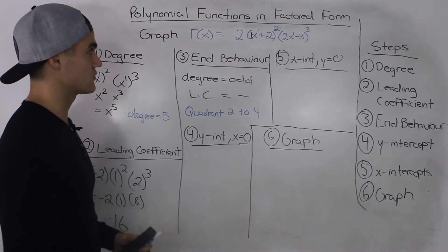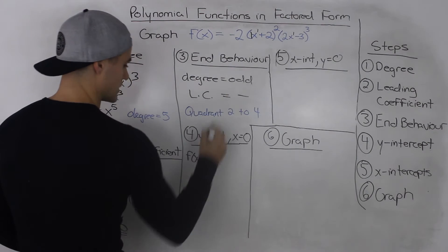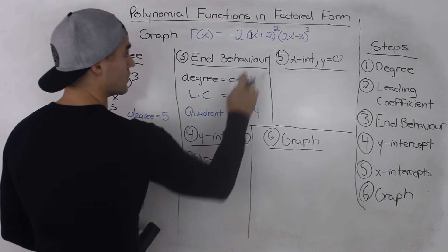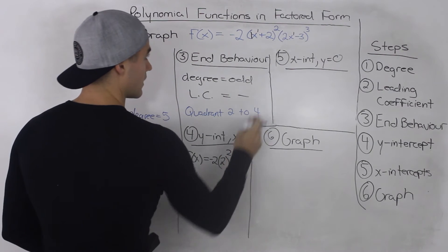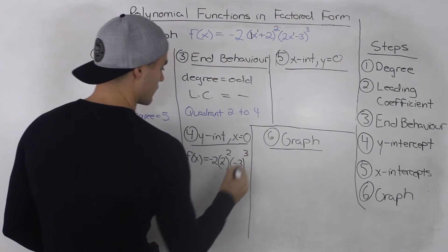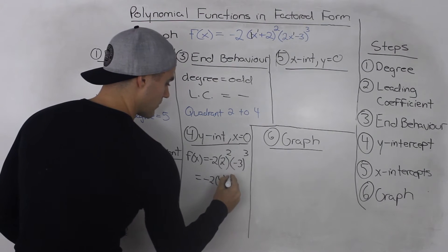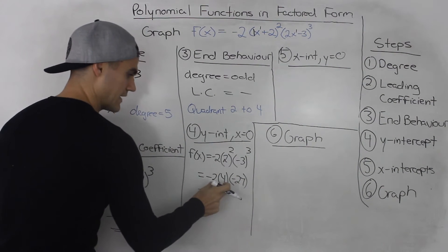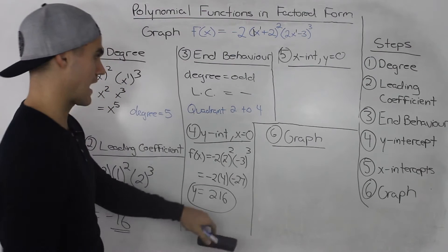Step 4, finding the y-intercept — we plug in 0 for all the x's. So f of x equals negative 2 times (0 plus 2), which just leaves us with 2 to the power of 2. And then 2 times 0 is 0, and 0 minus 3 is negative 3, to the power of 3. Simplifying: negative 2 times 2 squared is 4, and negative 3 to the power of 3 is negative 27. Negative 2 times 4 is negative 8, and negative 8 times negative 27 gives us positive 216. So 216 is our y-intercept.